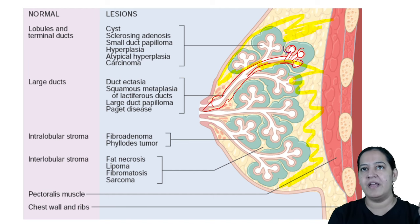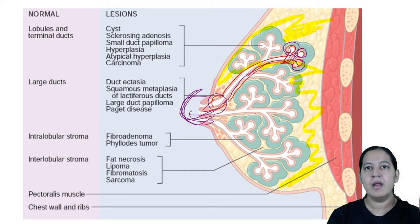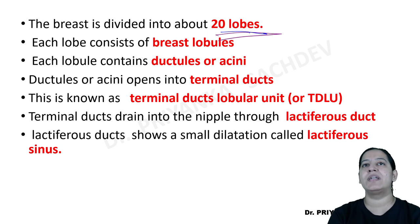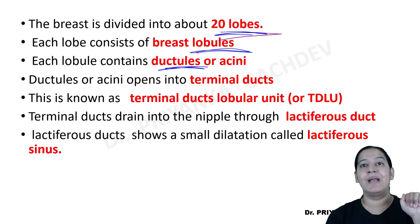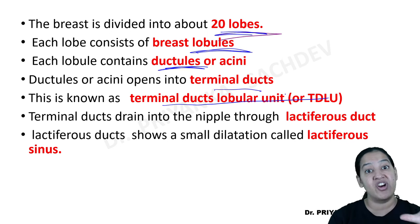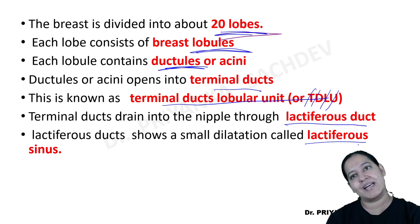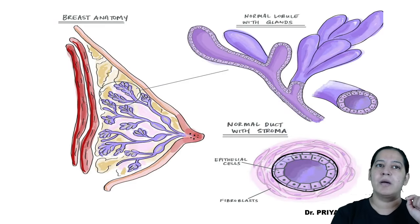Milk is formed in the ductules by the bilayered double lining. Milk comes to the terminal duct, then into the lactiferous duct. Milk is collected in the sinus and when the baby sucks the nipple of the mother, milk goes into the mouth of the baby. This is how the whole process of lactation takes place. This is the same diagram giving the same information. This is one TDLU — you can see multiple ductules opening in one terminal duct.